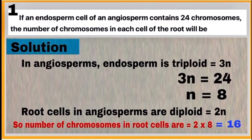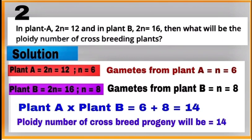Question 2: Here plant A and plant B are crossbred, and you have to tell the ploidy number of crossbreeding plants. See the solution. Plant A has chromosome number 12, so the number of chromosomes in its gamete will be 6. Plant B has chromosome number 16; its gametes will have chromosome number equal to 8.